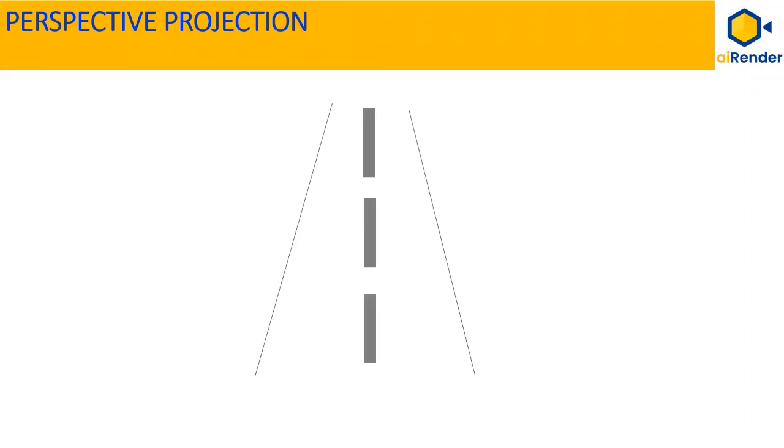The distance between the edges seem to be wider towards you and seem to be closer towards the far end of the road. This is a typical example of perspective projection and takes real-life perspective view of the scene.